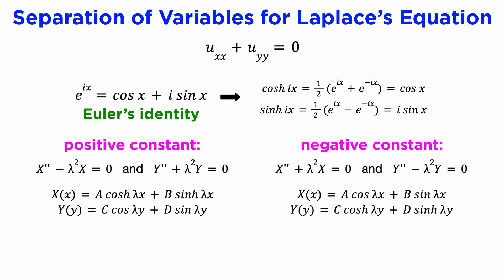What this means is that when we use a different sign of the separation constant lambda to solve the ODEs, we are effectively switching out trig functions for hyperbolic functions and vice versa.